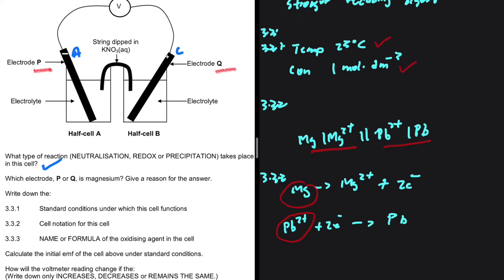This lead 2 plus is our oxidizing agent. It is the substance that is gaining electrons. So this is our answer to 3.3, lead ions.